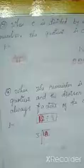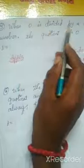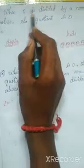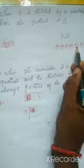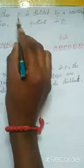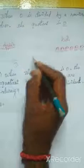The next property: when 0 is divided by a non-zero number, the quotient is 0. Example: there are no apples but there are 6 kids. So 0 apples divided by 6 (a non-zero number) — the quotient is 0.